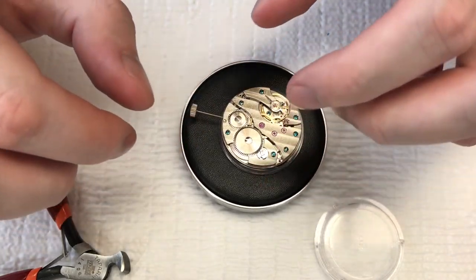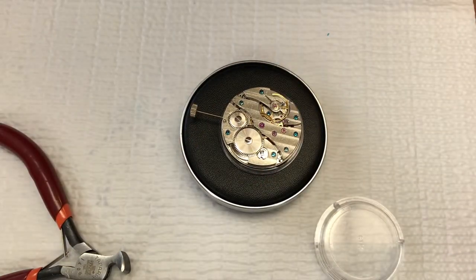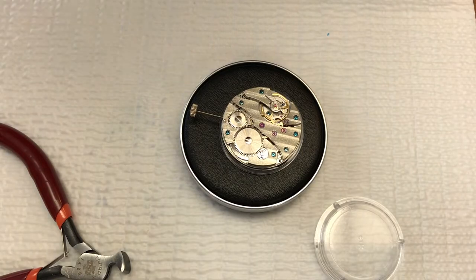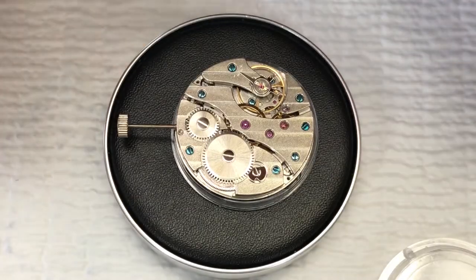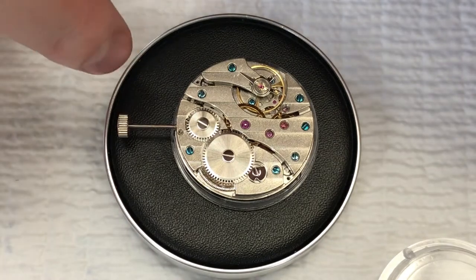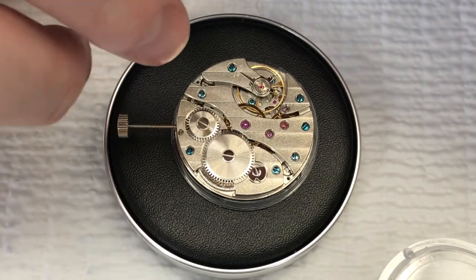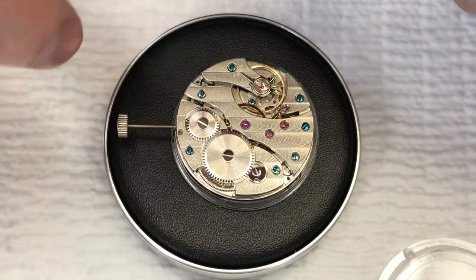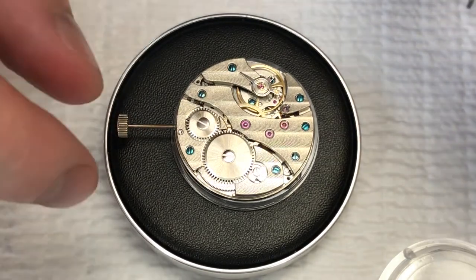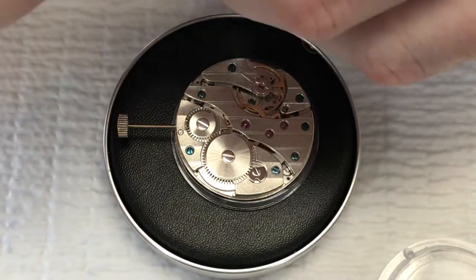I'm going to pull the stem out to the setting level, which is normal. That depends on the movement. One of the things you want to make sure to look at for a given movement is what position the stem should be in whenever you want to remove it. If you don't have it in the appropriate position, you can mess up the keyless works.